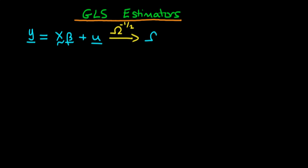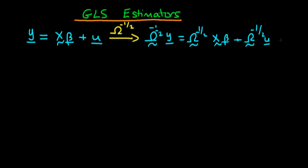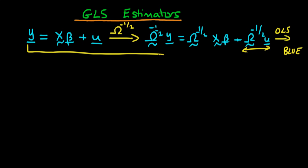That yields our transformed system: Ω^(-1/2) y = Ω^(-1/2) Xβ + Ω^(-1/2) u. We then estimate OLS on that transformed system, because we know the transformed error is homoscedastic, so OLS will be BLUE. In this video we derive the explicit form of GLS, which is doing all of these things in one step — that is what defines GLS.